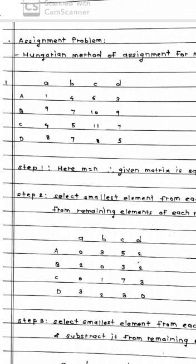So first thing in Hungarian method of assignment, you need to check is step 1: whether M is equal to N. That is whether number of rows is equal to number of columns. So in this case the number is correct. So the given matrix is a square matrix.